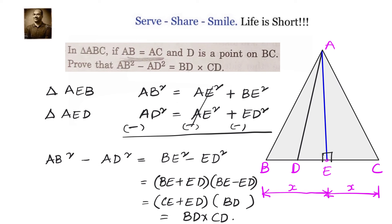Let us have a recap of this problem. We have been given triangle ABC, which is an isosceles triangle with AB equals AC and D is a point on BC. We have to prove that AB squared minus AD squared equals BD into CD. We dropped a perpendicular from A onto BC, and since it is an isosceles triangle, that is also the median, so BE equals CE and AE is perpendicular to BC.